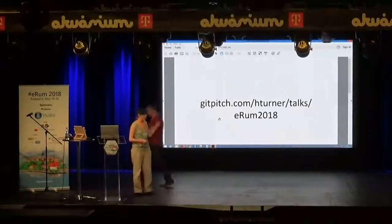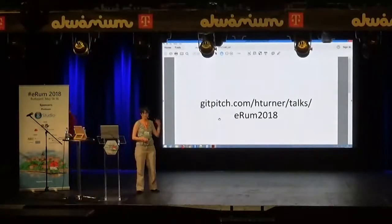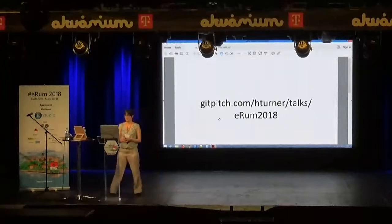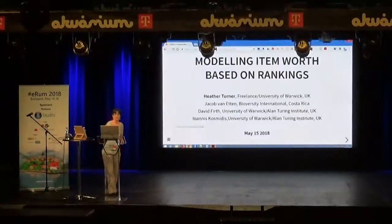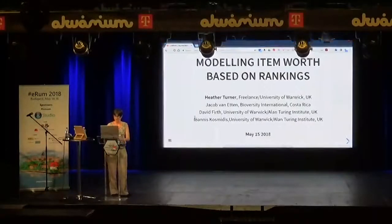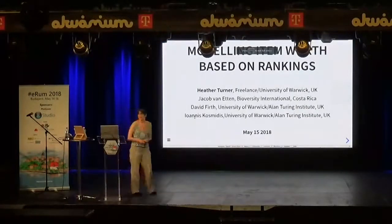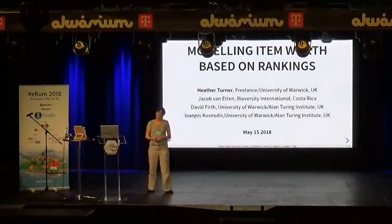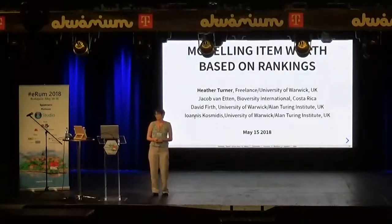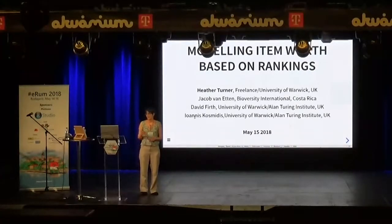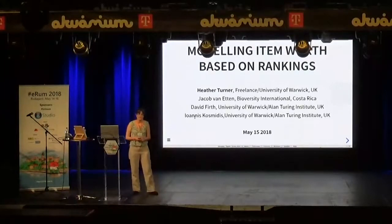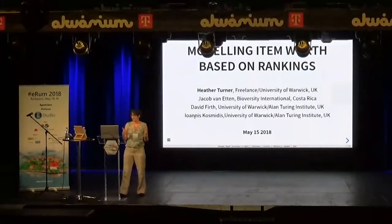If you want to have a look at the slides, they're on GitPitch on this link. I'll just leave it a second or two before I switch to them myself. So I'm going to be talking about modeling item worth based on rankings. This work was motivated by a project with Jacob Van Etten, who works in Costa Rica in agricultural development. We also had help from David Firth and Yanis Cosmitis on the programming and statistical methodology.